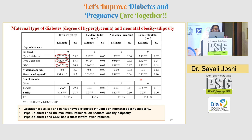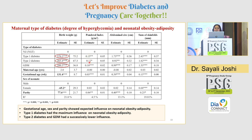As expected, we observed an influence of gestational age, sex, and parity on neonatal outcomes. However, an important observation was that type 1 diabetes had the maximum influence on neonatal obesity and adiposity — babies born in type 1 diabetes pregnancies were heavier by 370 grams compared to those born in normal glycemic pregnancies. Type 2 diabetes and GDM had successively lower influence: babies born to type 2 diabetic mothers were heavier by 265 grams and those in GDM pregnancies by 200 grams. Similar influence was seen for ponderal index, abdominal circumference, and sum of skinfolds.